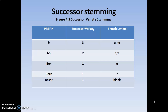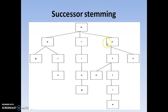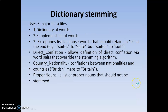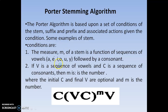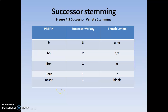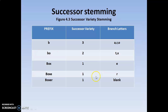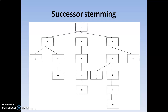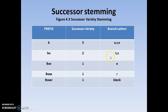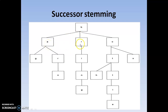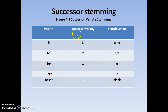Now, what are the branch letters or successor variety? For B, how many successor variety branch letters are there? For B, you have 3 successors: A, R, O — that is what I have written in this table. Successor variety is 3, branch letters are A, R, O. Coming to the second one, that is B-O. For B-O, you have 2 branch letters: T and X.